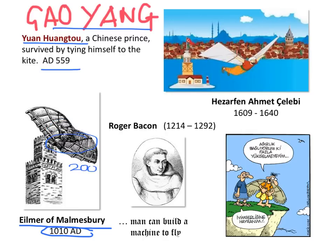Two hundred years later, in 1200, Roger Bacon, an English philosopher and cleric, wrote about flying machines. During the 17th century, the famous Turkish aviator Hezerfen Ahmed Celebi appeared. He managed to fly from the Galata Tower all the way to Uskudar.